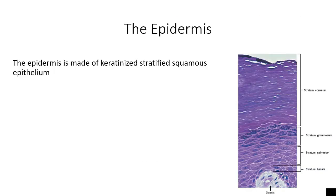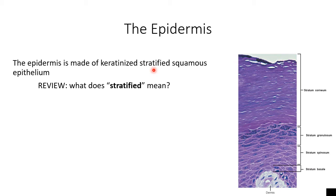Remember from our previous video that the epidermis is made of a type of skin called keratinized stratified squamous epithelium. The word stratified means that there's more than one layer of cells. In places like the palms of your hands or the soles of your feet, we can have as many as 50 layers of cells. In places with thin skin, like your eyelids, we may only have five to ten layers.